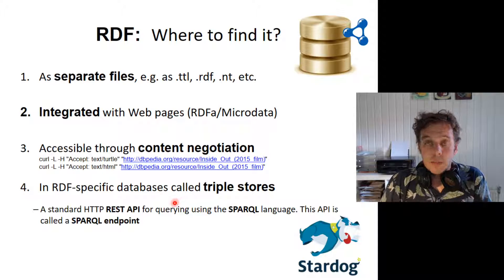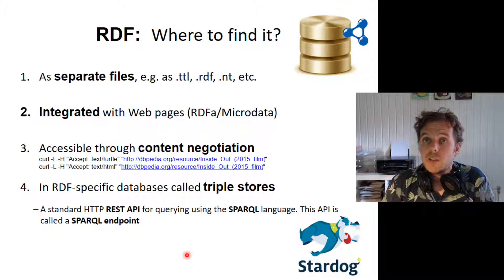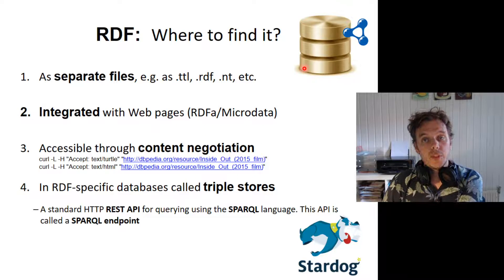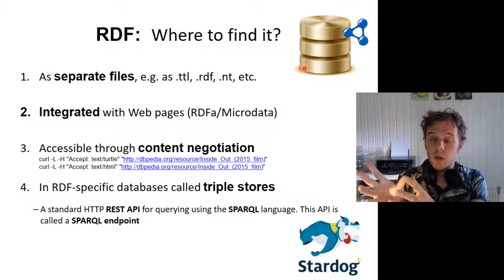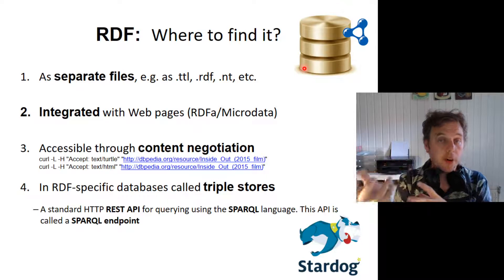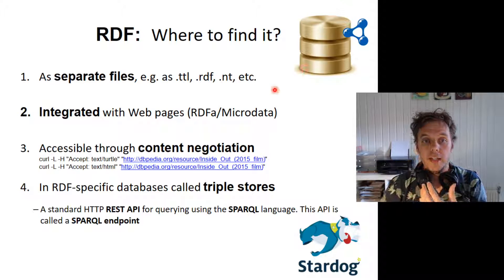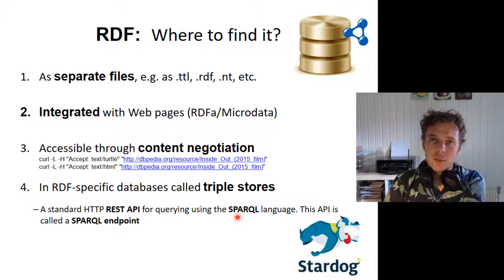Most of the RDF you might encounter is found through publicly accessible triple stores. Triple stores are basically just databases for triples — they are optimized for that and store information in triple form. They expose their data to the outside world via a SPARQL endpoint, where you can fire your queries and requests for data.